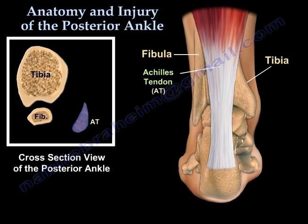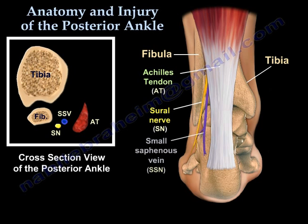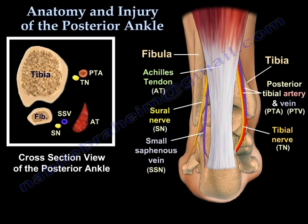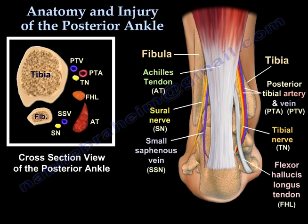Achilles tendon, sural nerve, small saphenous vein. The tibial nerve and the posterior tibial artery and vein, followed by the flexor hallucis longus tendon and the retrocalcaneal bursa.